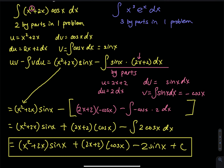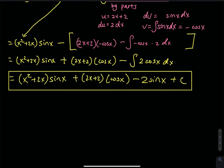Let's do the purple one. Do you see that there is a third power here? This is the reason why we have to do integration by parts three times. In order to get rid of the third power, you have to take the derivative three times. So let's start. The problem is the integral of x to the third times e to the x dx.